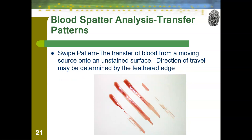Then we have our swipe pattern — the transfer of blood from a moving source onto an unstained surface. Direction of travel may be determined from the feather edge. We can see that this is likely a hand; you can see the three larger fingers and the pinky. You can tell it started in the upper left-hand corner and went down toward the bottom right because the blood is thicker at the top and feathers out as it moves down.